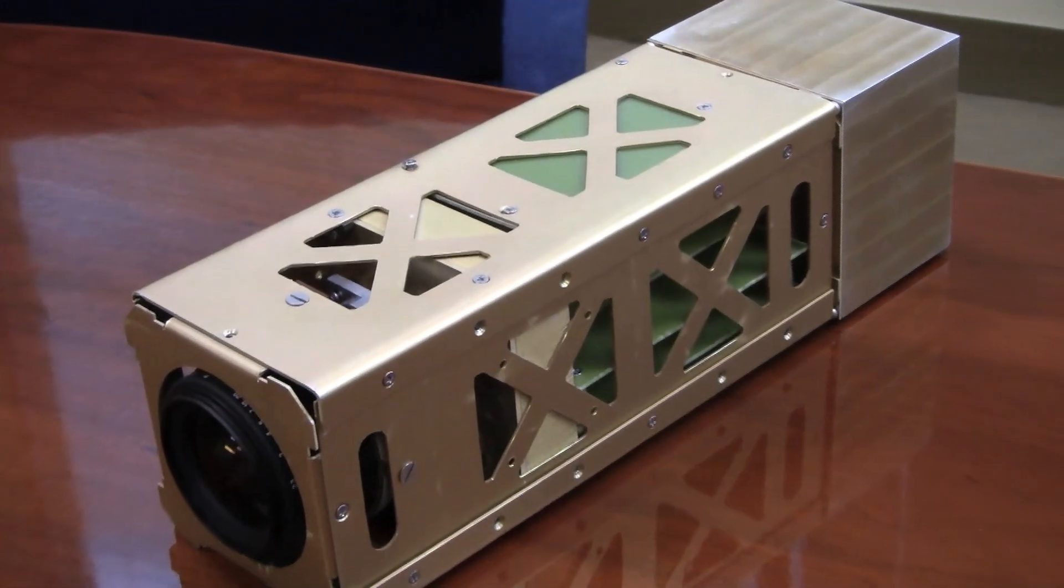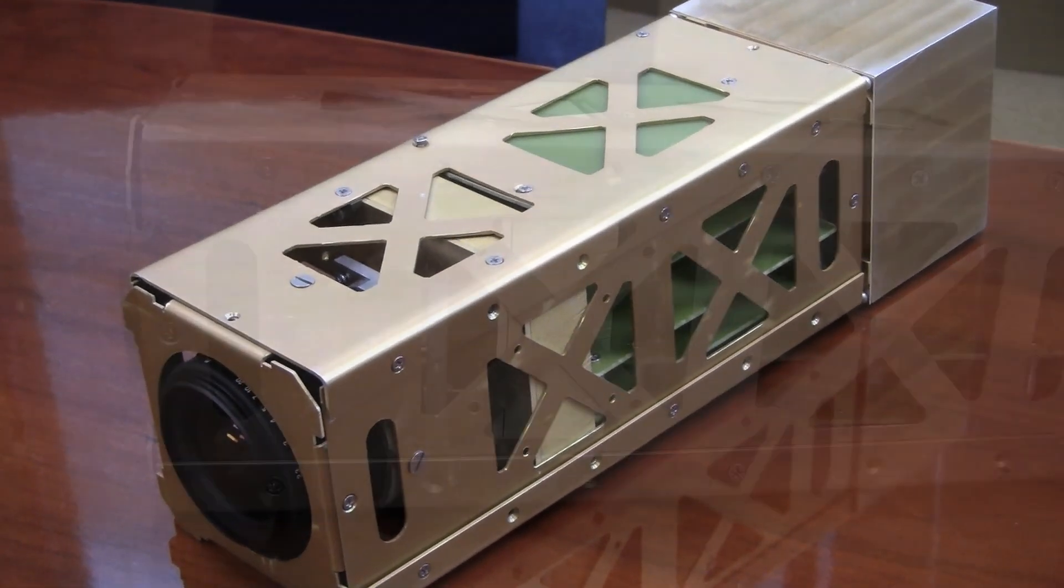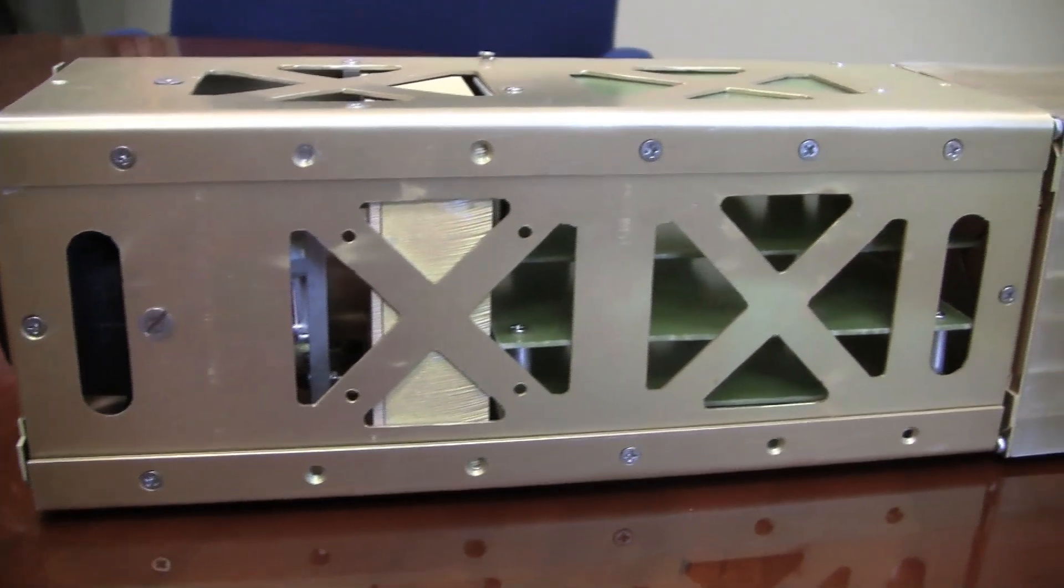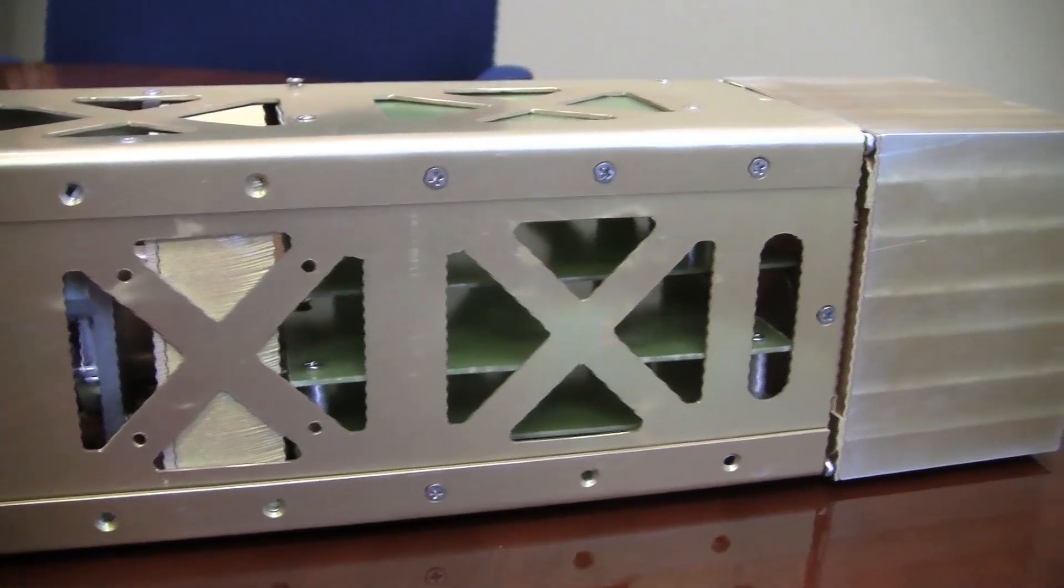The nanosatellite, called ExoplanetSat, is the size of a loaf of bread and packs powerful optics and new control and stabilization technology.